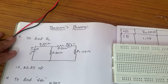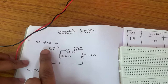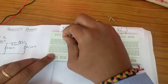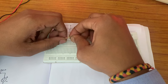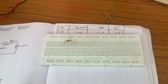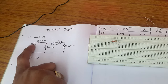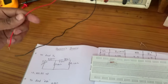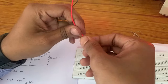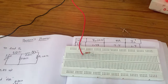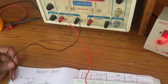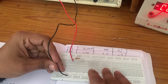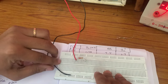Now let's connect the circuit. First I am connecting a 2.2 kΩ resistor here. The RPS positive is connected to the 2.2 kΩ first terminal. This RPS positive is connected to the 2.2 kΩ first terminal. The RPS negative is connected to ground.